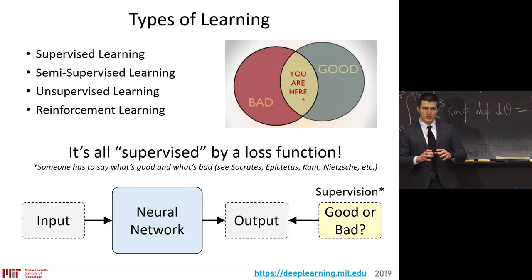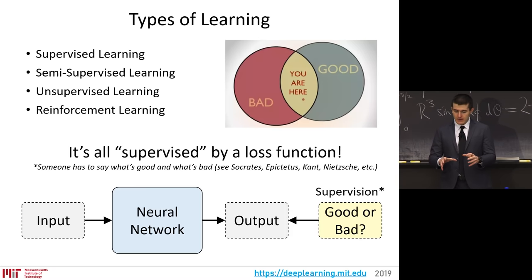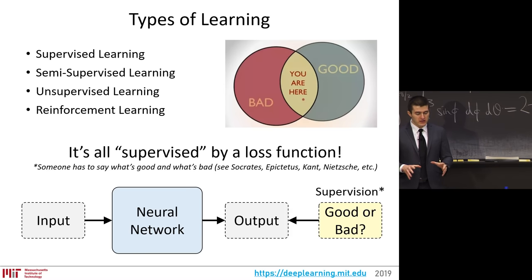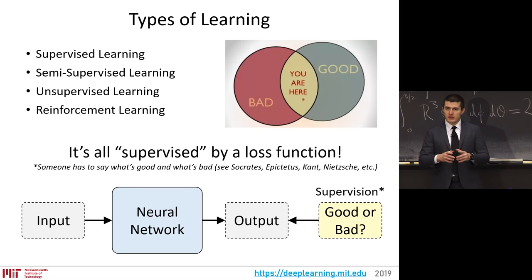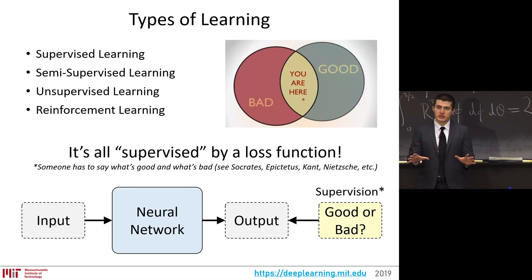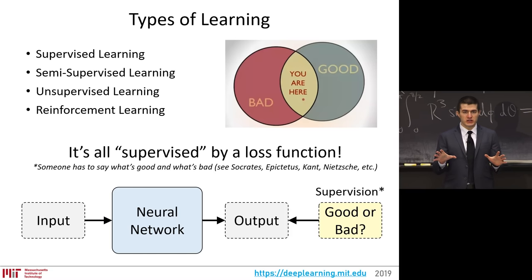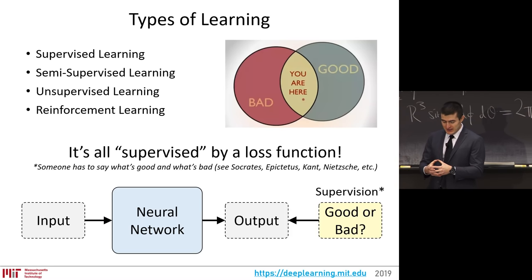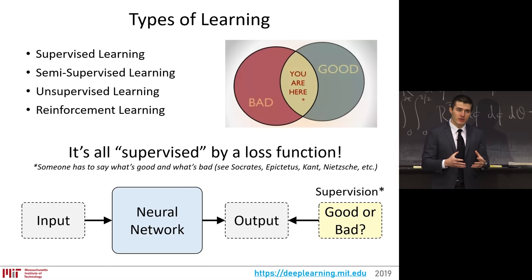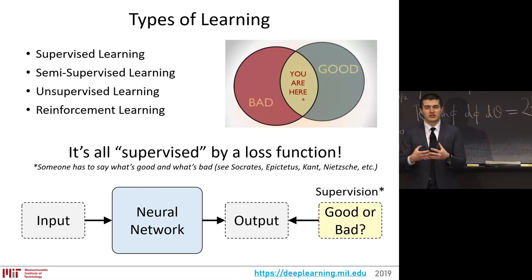We have to take a step back when we look at the types of learning, because sometimes the terminology itself can confuse us. There is supervised learning, semi-supervised learning, unsupervised learning, and reinforcement learning. There's a feeling that supervised learning is the only one where you have to perform manual annotation or large-scale supervision. That's not the case. Every type of machine learning is supervised learning — supervised by a loss function that tells you what's good and what's bad. The difference between supervised, unsupervised, and reinforcement learning is the source of that supervision.